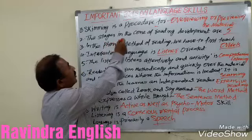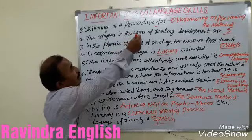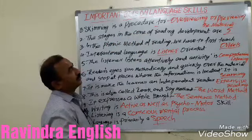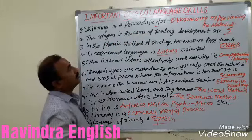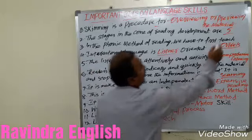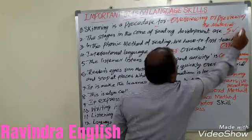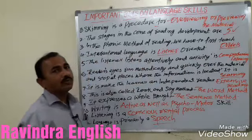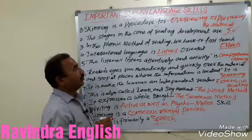So here are the stages in the cone of reading developments. There are 5 reading developments — only 5 steps of reading developments.